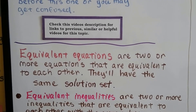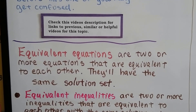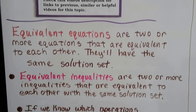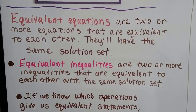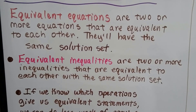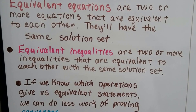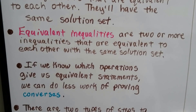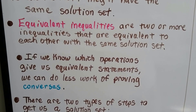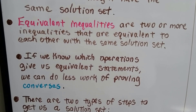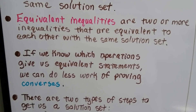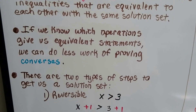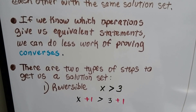Equivalent equations are two or more equations that are equivalent to each other, and they have the same solution set. Equivalent inequalities are two or more inequalities that are equivalent to each other with the same solution set. If we know which operations give us equivalent statements, we can do less work of proving converses. That's always a good thing, right — to not have to do more work?